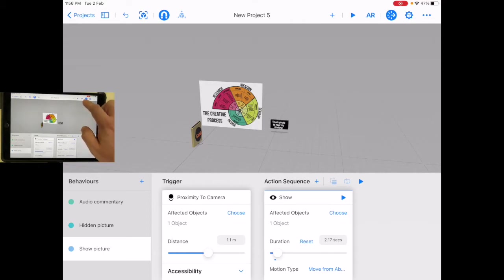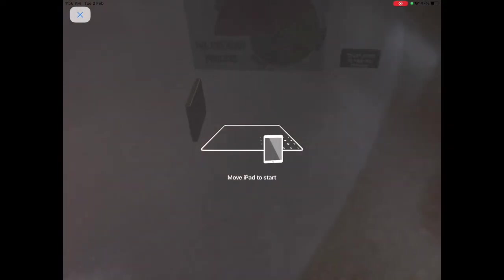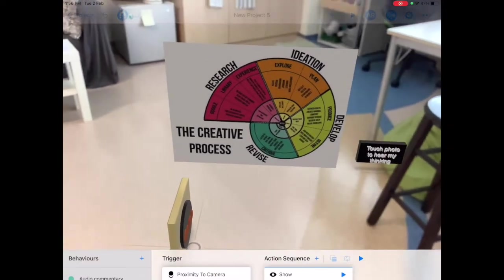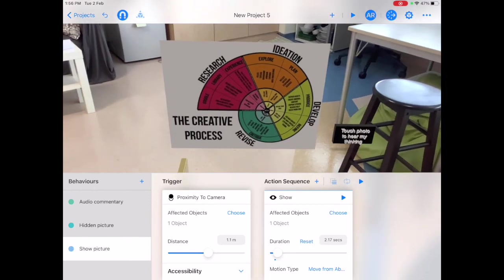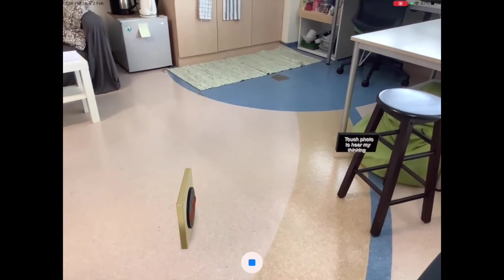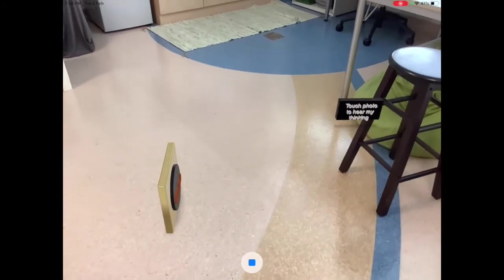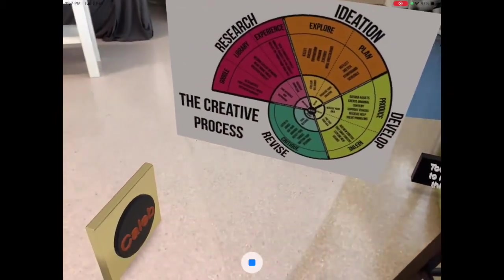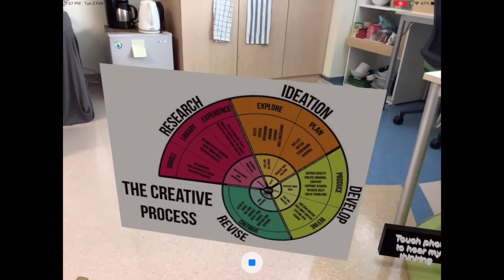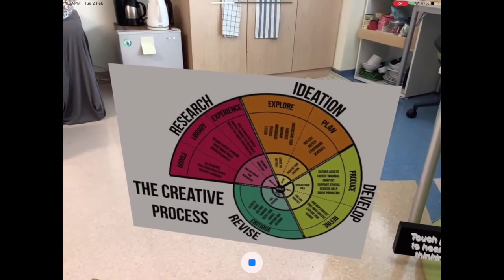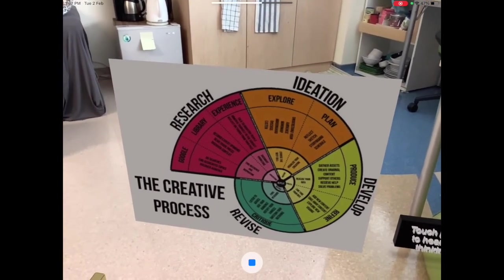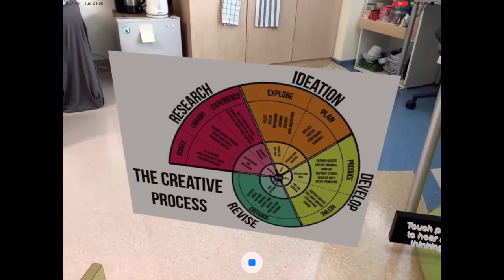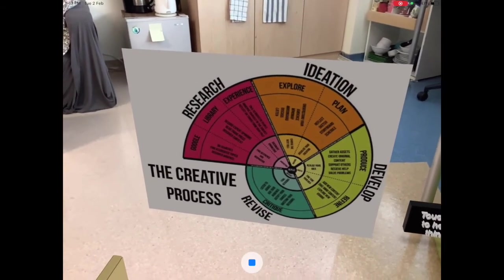I'm going to turn on AR and let's go. There it is. I'm going to move back and let's go play. So it starts hidden. When I get close — hopefully — there it comes. It has appeared. And if I tap it, my volume is not up, but it will play that sound. If I tap it, you can hear the sound.